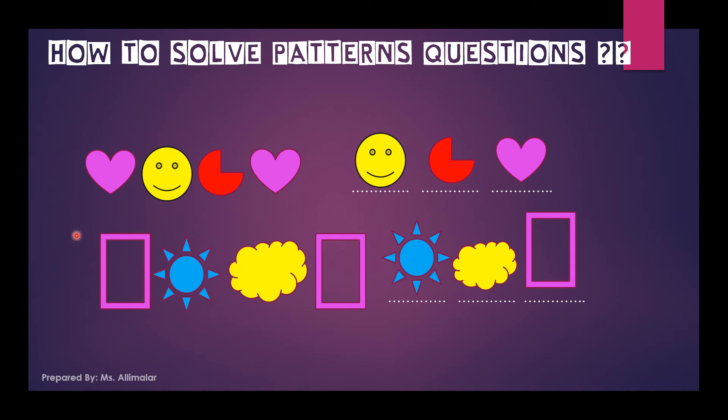Now let's look at the second question. What is this? Rectangle, sun, cloud. Correct! Now look here guys - rectangle, sun, cloud, rectangle, sun, cloud, rectangle. That is the pattern. The pattern starts with rectangle, the second is sun, the third is cloud, and then it starts with rectangle, second is sun, third is cloud.